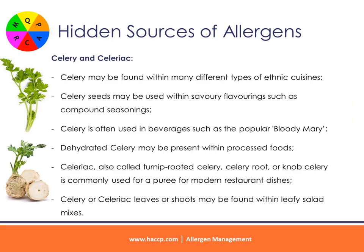Celery and celeriac: celery may be found within many different types of ethnic cuisines. Celery seeds may be used within savory flavorings such as compound seasonings. Celery is often used in beverages such as the popular Bloody Mary. Dehydrated celery may be present within processed foods. Celeriac — also called turnip-rooted celery, celery root, or knob celery — is commonly used as a puree for modern restaurant dishes. Celery or celeriac leaves or shoots may be found within leafy salad mixes.